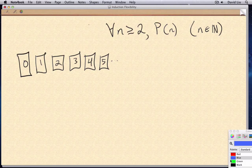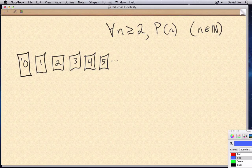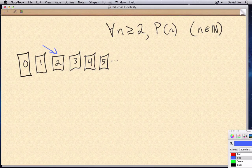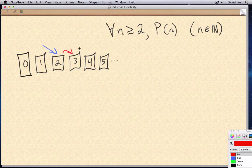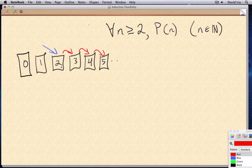And we can do that by starting off the chain, not by pushing down domino zero, but by pushing down domino two, and having the links remain the same. Every domino falling causing the next one to fall.